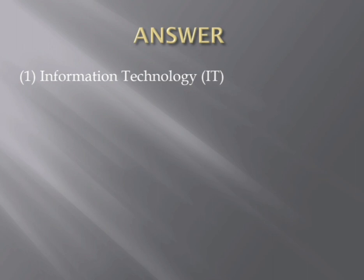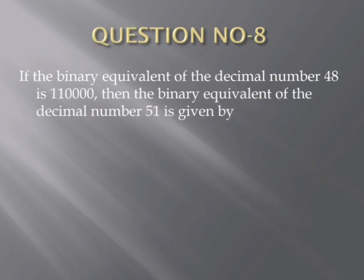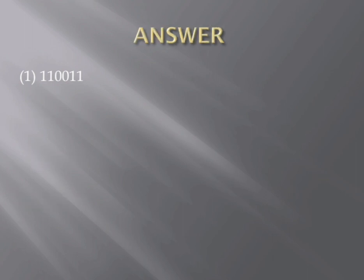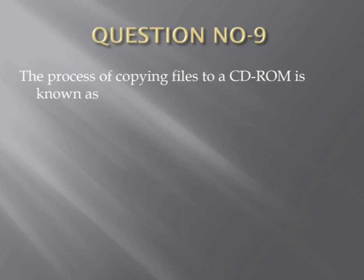Question number eight. If the binary equivalent of the decimal number 48 is 110000, then the binary equivalent of the decimal number 51 is given by — Options: (1) 110011, (2) 110010, (3) 110001, (4) 110100. The correct answer is the first one — 110011.